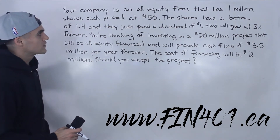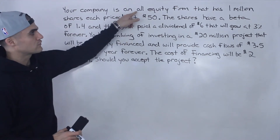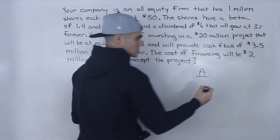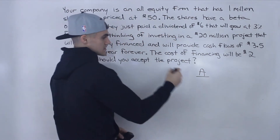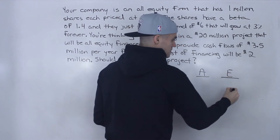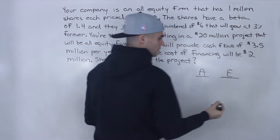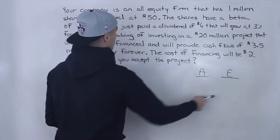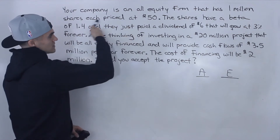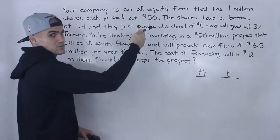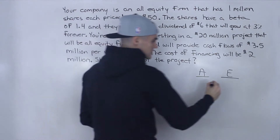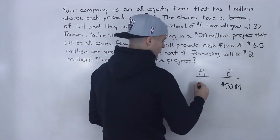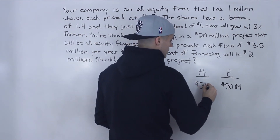Whenever you get a question dealing with an all-equity firm, that means there's no debt — the right side of the balance sheet is composed of only equity. It's a 100% equity firm. The value of the equity is 1 million shares times $50, giving us an equity value of $50 million, which means the left side of the balance sheet is $50 million as well.